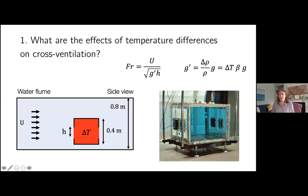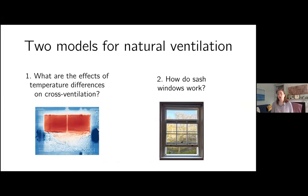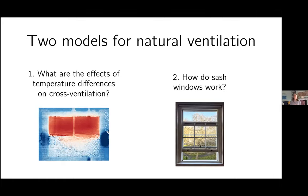I'm going to go through two examples of mathematical models for natural ventilation. The first model looks at the effects of temperature differences on cross ventilation. We have really good models for cross ventilation and for exchange ventilation — ventilation driven by temperature differences — but it's quite interesting when you combine these two things together. There are some nice subtleties, and at the moment it's quite often done by either picking whichever is bigger, or sometimes adding pressure differences and taking the square root, but it's actually a bit more non-linear than that.